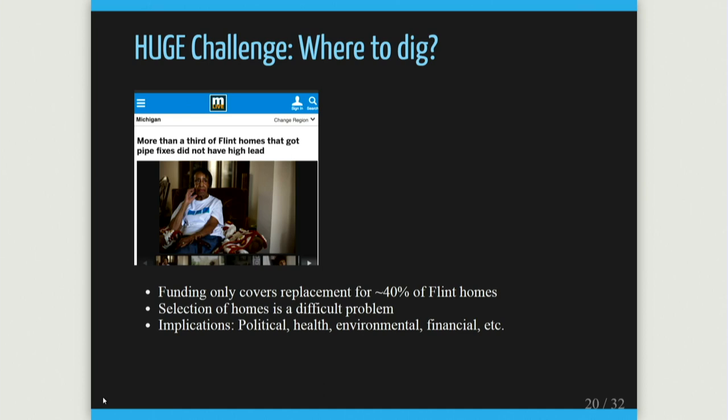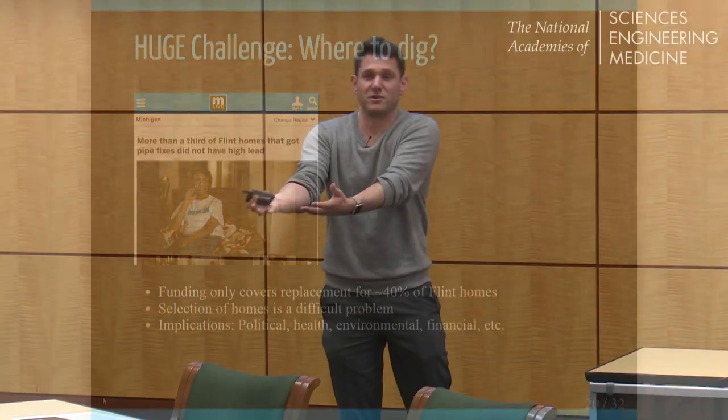There are political implications to making home selection decisions. I remember presenting to city council some of our work on estimating service line content. After a technical discussion, a woman came up and said, 'Could you come over to my house and look at my pipes?' She gave me her number and address and said, 'Can you come by tomorrow?' I'm thinking, I have a Python script that answers these questions — I don't know how to use this. That was a very raw moment: all these numbers we're running are actually affecting this poor woman.